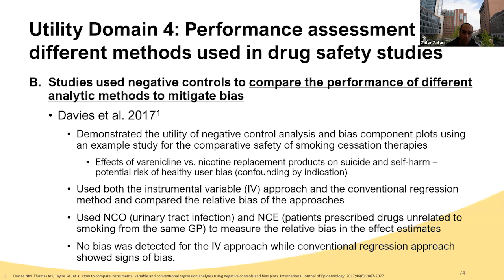The second subdomain was the use of negative control to compare different analytical methods. A good example is Davis et al., 2017, looking at the effect of nicotine replacement on suicide and self-harm potential risk. They compared two analytical methods—the instrumental variable approach and the conventional regression approach—and how much these approaches are capable of capturing bias. They used an NCO as urinary tract infection and NCE as a prescribed drug unrelated to smoking, and showed no bias for the IV approach while the conventional approach showed some biases.